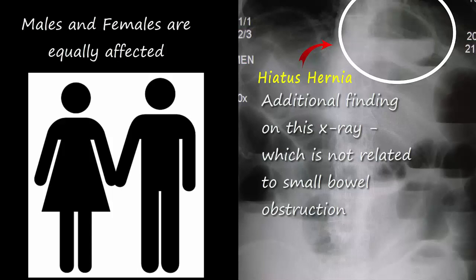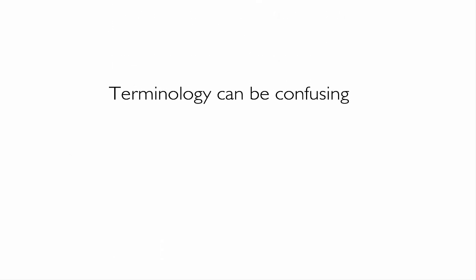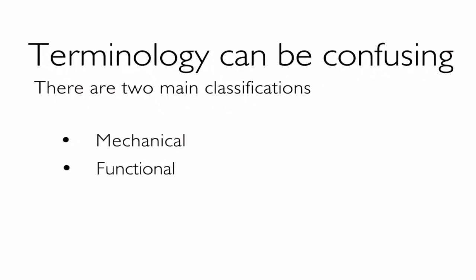Literature can be confusing when describing types of intestinal obstruction. You will come across terms such as closed loop obstruction, intraluminal, intramural, extramural, and others — these are different ways to describe the condition in terms of etiology. But basically there are two main classifications: mechanical or functional.